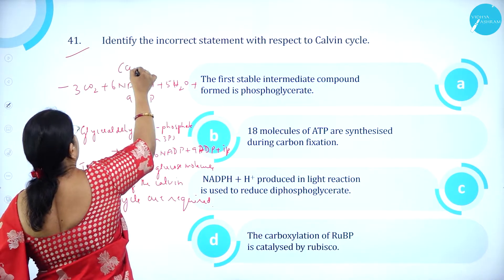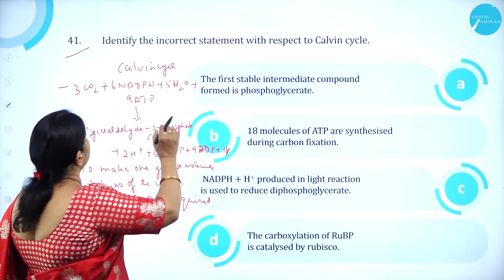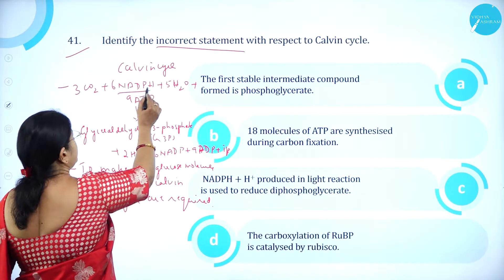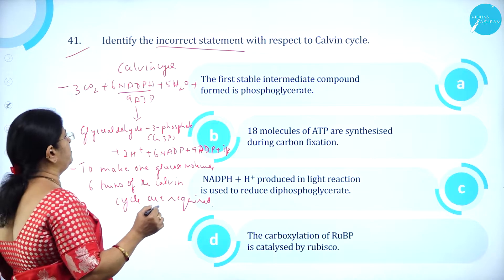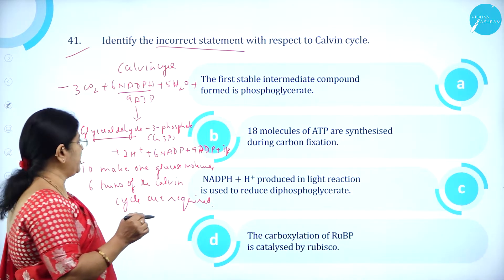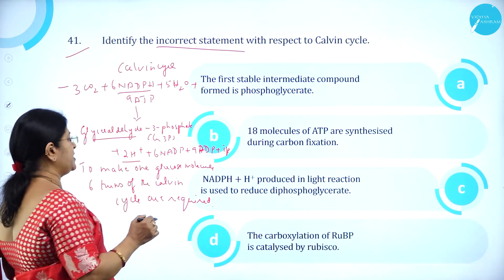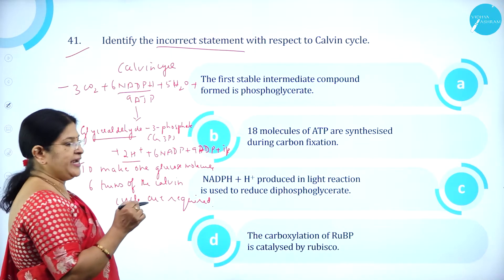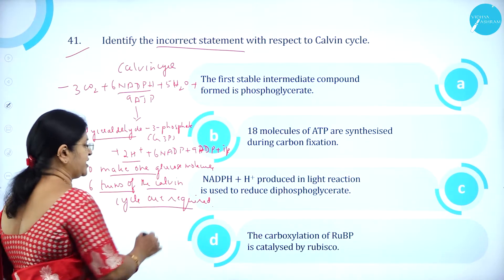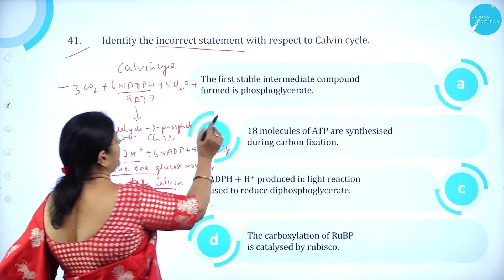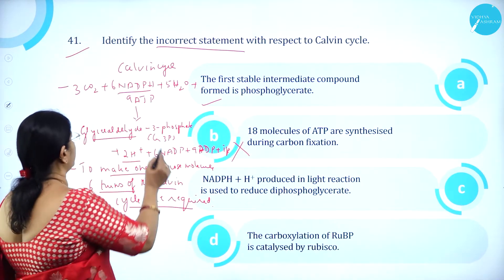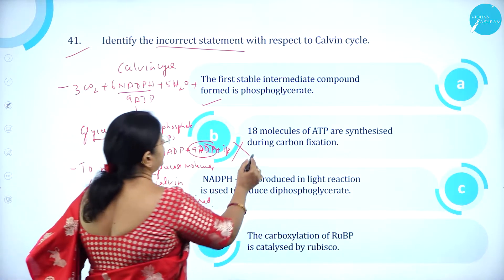In Calvin cycle, we need to identify the incorrect statement among the four options. The equation is: 3 CO₂ + 6 NADPH + 5 H₂O + 9 ATP gives rise to glyceraldehyde-3-phosphate (G3P) and 2H⁺ + 6 NADP + 9 ADP + inorganic phosphate. To make one glucose molecule, 6 turns of Calvin cycle are required. The first stable intermediate compound — phosphoglycerate — is correct. But 18 molecules of ATP are synthesized during carbon fixation is wrong; you can see here it is 9.